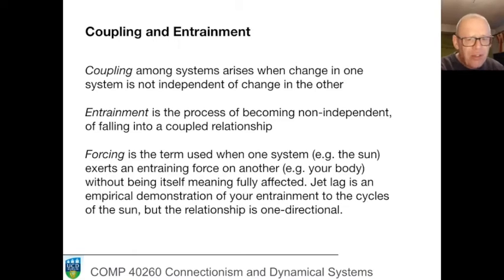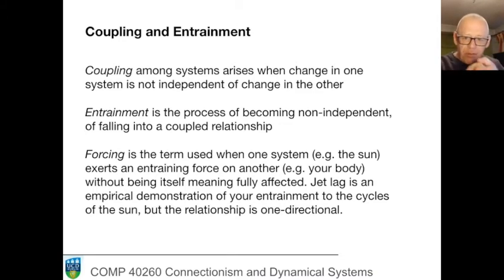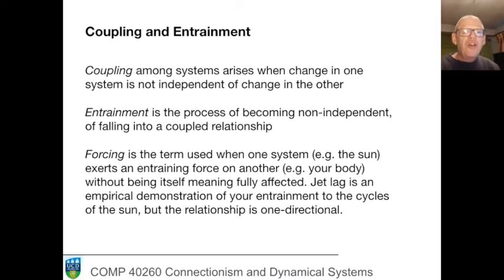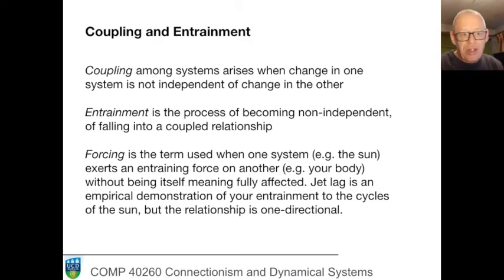Coupling arises when two systems are not independent of each other, so the change in one goes along with change in the other — two hands and a handshake are coupled. Entrainment is usually described as the process of falling into this relationship. If you're walking down the street with someone and slowly your gait synchronizes, you've become entrained to each other. So entrainment is falling into this relationship, and coupling is the relationship that arises.